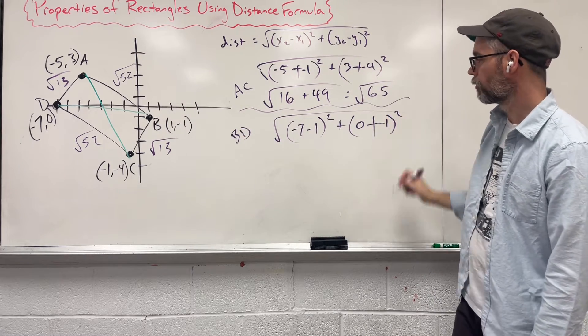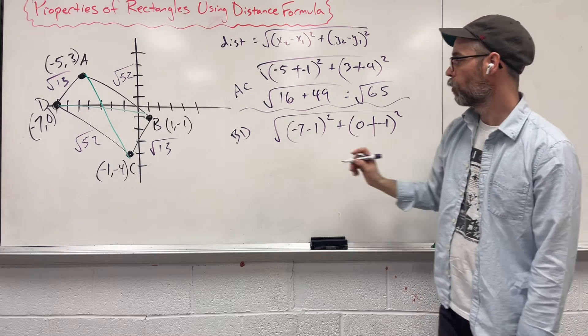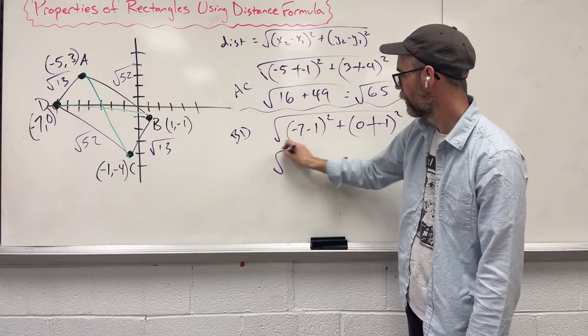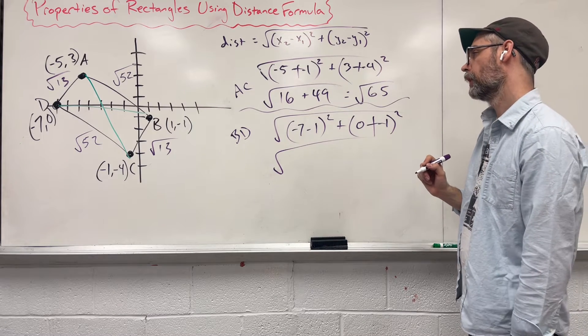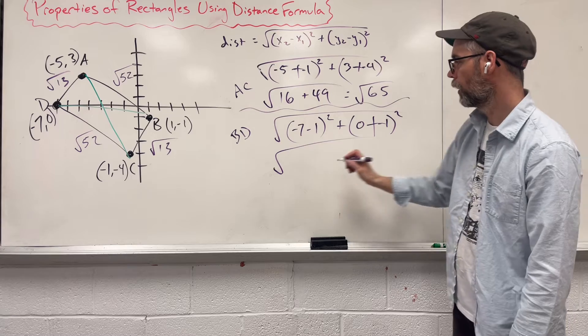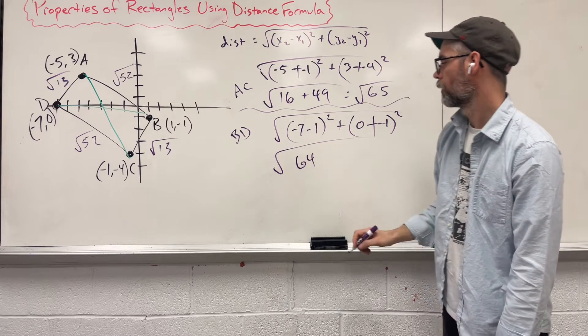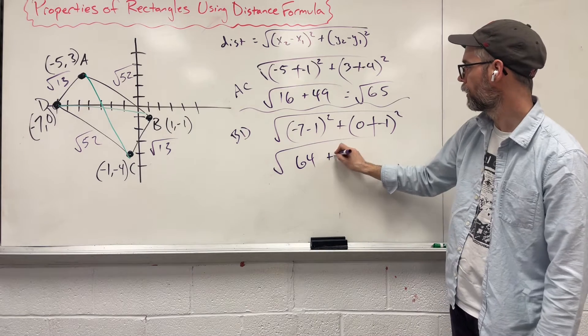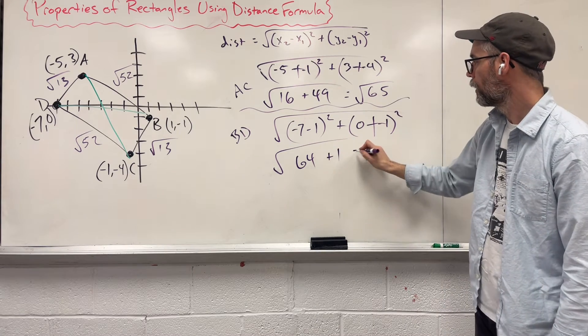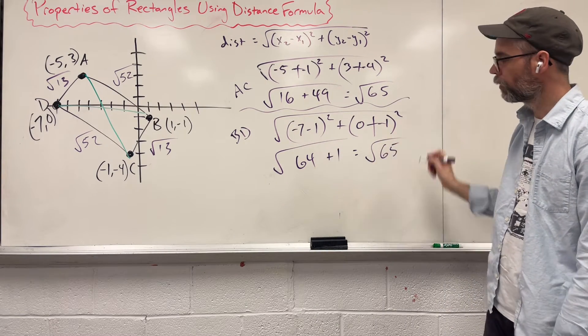Negative 7 minus 1 is negative 8. Square root negative 8, you're going to get 64. On the other side, 0 plus 1 is 1, 1 squared is 1. And we are left with square root of 65.